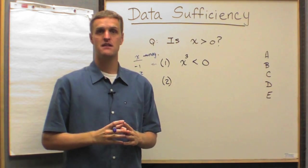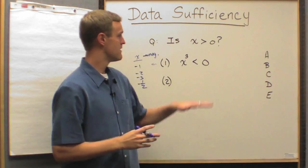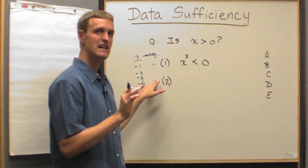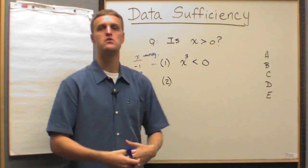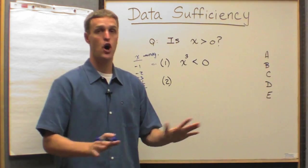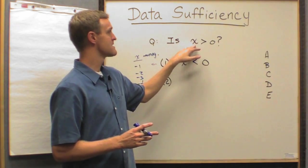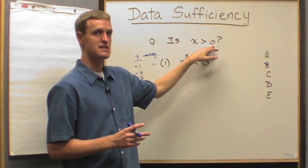Now, what is x? Remember, we talked about that before. We don't actually care what x is. And in this case, we're not able to definitively know what x is, but we know something about the nature of x. And specifically, we know that x is negative. In all cases, it will be negative, which brings us to the question, is x greater than zero?